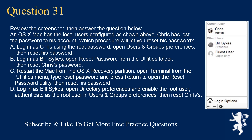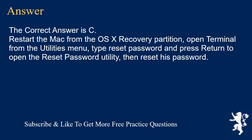Question 31. Review the screenshot, then answer the question below. An OSX Mac has the local users configured as shown. Chris has lost the password to his account. Which procedure will let you reset his password? A. Log in as Chris using the root password, open Users and Groups Preferences, then reset his password. B. Log in as Bill Sykes, open Reset Password from the Utilities folder, then reset Chris's password. C. Restart the Mac from the OSX recovery partition, open Terminal from the Utilities menu, type 'resetpassword' and press return to open the Reset Password utility, then reset his password. D. Log in as Bill Sykes, open Directory Preferences and enable the root user, authenticate as the root user in Users and Groups Preferences, then reset Chris's password. The correct answer is C: Restart the Mac from the OSX recovery partition, open Terminal from the Utilities menu, type resetpassword and press return to open the Reset Password utility, then reset his password.